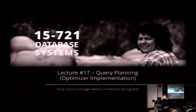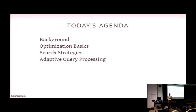For today's class, we're going to focus on how do you build an optimizer and perform the search. Then on Wednesday, we'll talk about how do you, in your optimizer, predict the cost of executing a query. We'll provide some basic background on query planning in a relational database system, discuss different strategies for performing the optimization search, and then say a little bit at the end about adaptive query processing, but we'll probably run out of time.